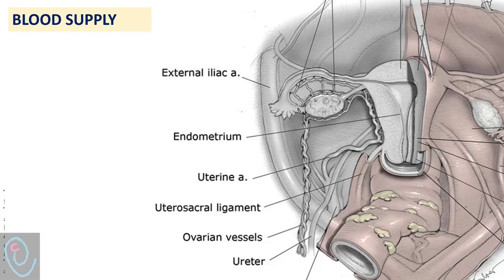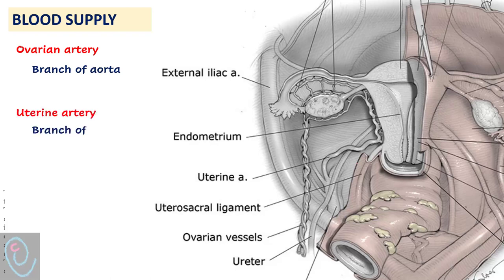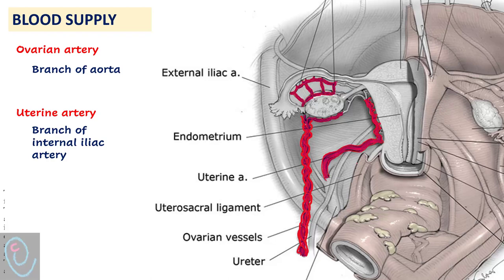Regarding the blood supply, the ovaries receive a double blood supply from the ovarian artery and the utero-ovarian artery. The ovarian artery arises directly from the abdominal aorta and travels in the infundibulopelvic ligament, supplying the ovaries and fallopian tubes. The utero-ovarian artery is a branch of the internal iliac artery and bifurcates into the tubo-ovarian artery, which anastomoses with the ovarian artery.